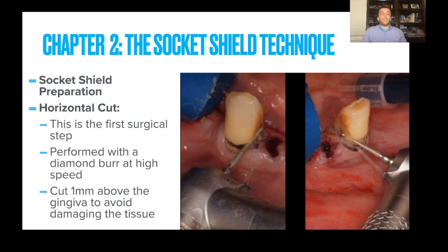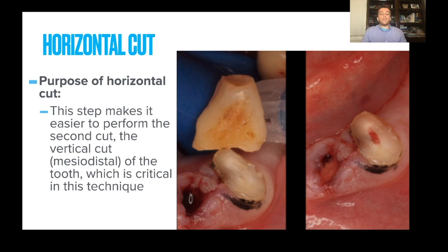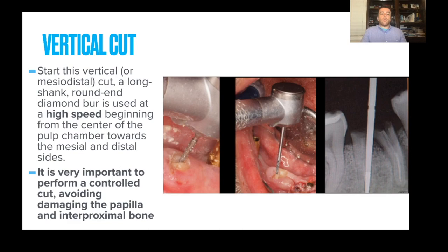The socket shield technique first begins with a horizontal cut — the first surgical step. You're going to use a diamond at high speed, ensuring the cut is made above the gingiva to avoid damaging any tissue. The purpose of the horizontal cut is to make the subsequent vertical cut easier. The vertical cut must be performed carefully so you do not damage adjacent teeth or the bone. You'll use a long shank round diamond burr at high speed, beginning from the center of the pulp chamber towards the mesial and distal sides.